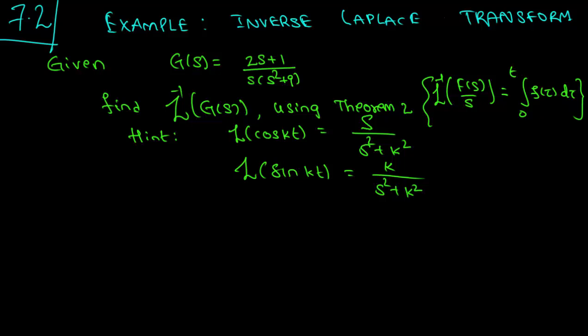Hello class, this is section 7.2. In this video we will work through an example to find the inverse Laplace transform of the given function g(s) = (2s + 1) / (s · (s² + 9)) using Theorem 2 in the section.